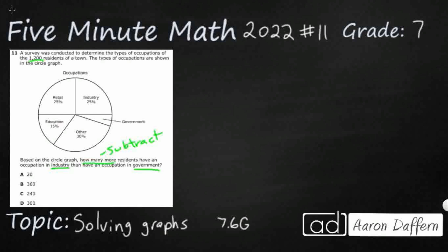This whole circle graph equals 100%, so first let's figure out what the missing percent is for government. We're not going to eyeball it — we're going to add up all the other percents. Retail and industry are 25 and 25, education is 15, and other is 30. So that plus my missing government is going to equal 100%. That gives us 95, so government is just 5%.